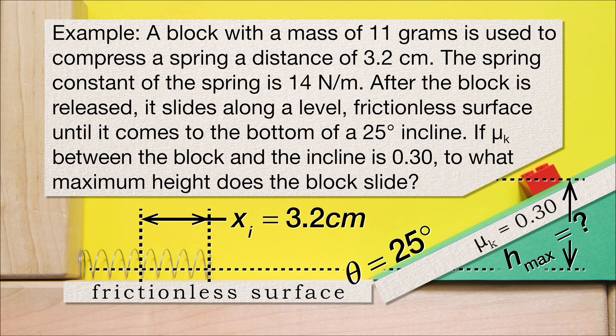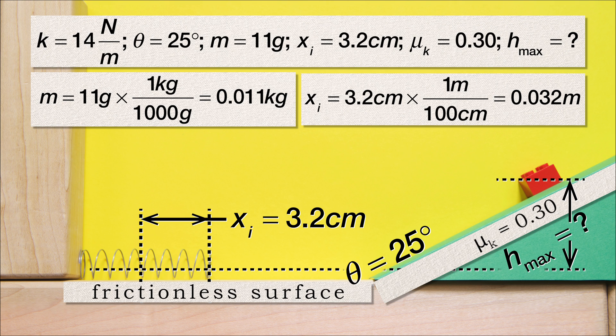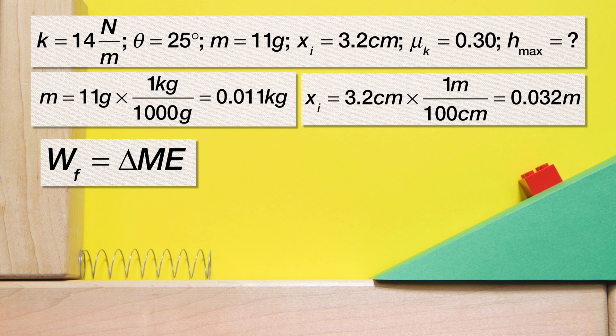Again, we list our known values and convert to base SI units. But now we need to use the work due to friction equals change in mechanical energy equation. We can use this equation because there is work done by a force of friction. However, there is no work done by a force applied.